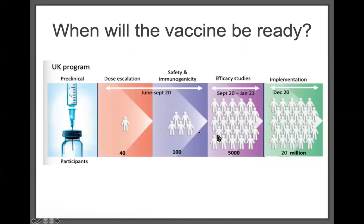Our current path to the clinic: we are completing our preclinical package including animal studies and toxicology. We plan a dose escalation study in 40 participants starting in June to identify the correct dose. We'll then evaluate safety and immunogenicity in a wider population of 100, followed by efficacy studies starting in September with 5,000 people, and implementation hopefully starting in December for 20 million people.